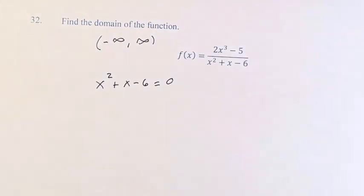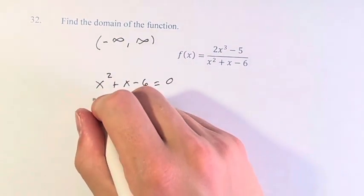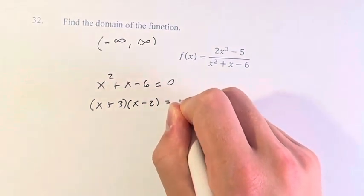Solving this quadratic, if you don't see how to do it, you could complete the square or use the quadratic formula, but we can just factor here. It's pretty simple. x plus 3 times x minus 2 is equal to 0.